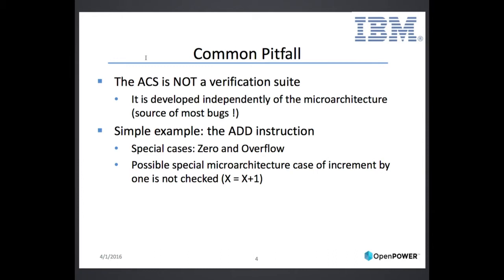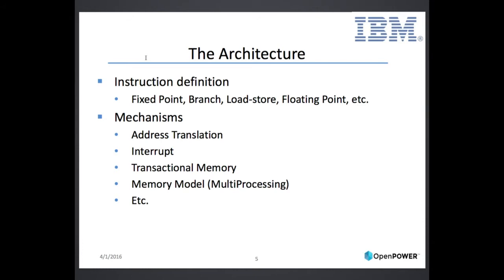When we speak about a suite of tests, there are two components. One, the target is the architecture, and the other is the tests themselves and their content. The architecture, for us, is seen as two parts. One is the instruction — the definition of the instruction — there are more than a thousand instructions. And then there are mechanisms which are also defined in this architecture, like address translation, interrupt, transactional memory, and memory model. One point to note is that we cover multiprocessing in this suite as well.